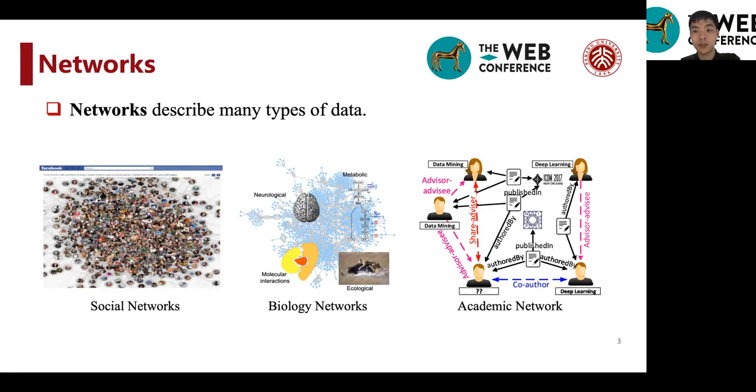And also in academic networks, nodes can be scholars and the links can be of different types. For example, a link can either be an author published a paper, and a paper is published in a conference.